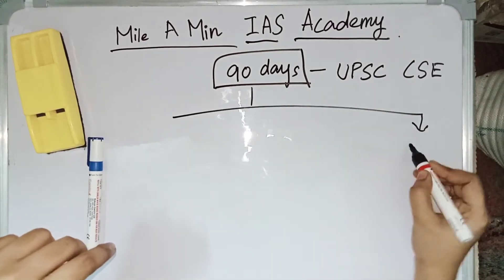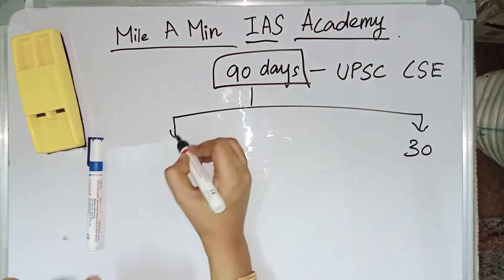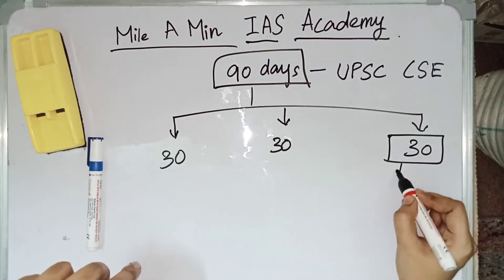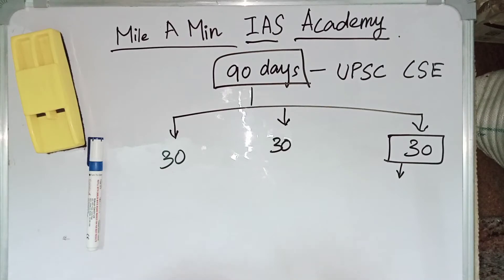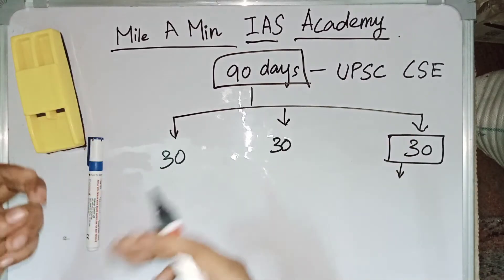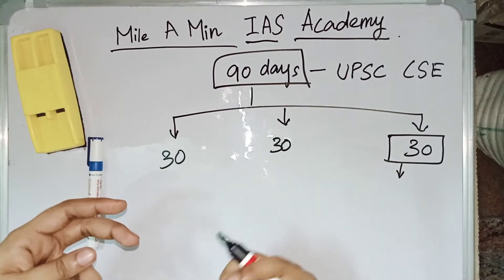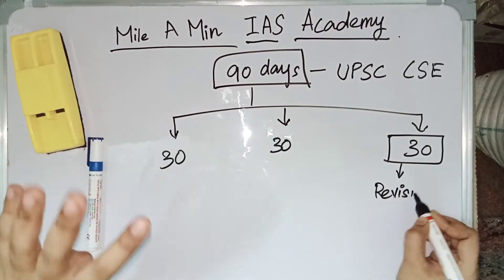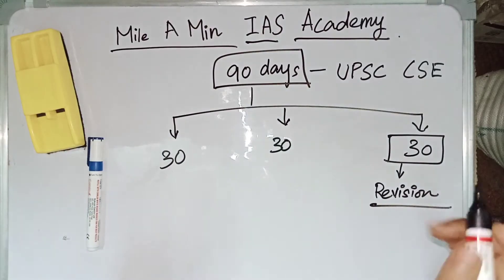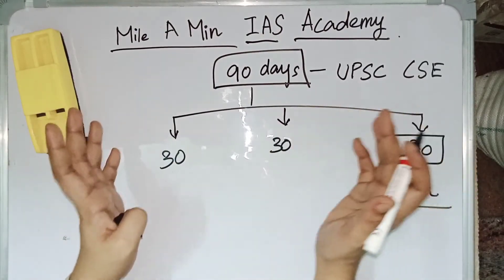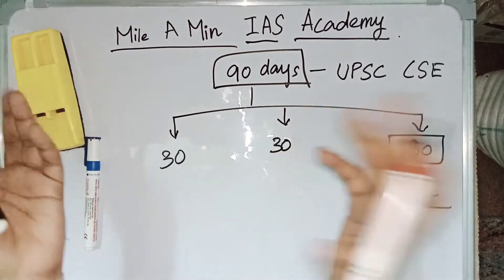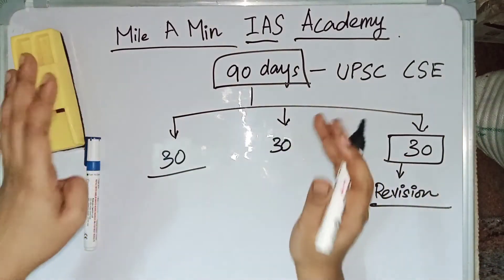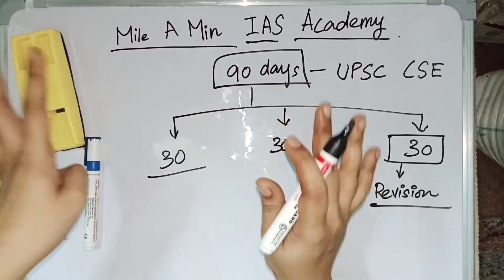First let us divide the 90 days into 3 parts of 30 days each. The last 30 days is for revision, because revision is the one which will boost your preparation and make you recall the subjects you have already read. The first 60 days is the time period in which you can learn your syllabus. In the first 30 days we should focus on the subjects which are really important as well as easy subjects.